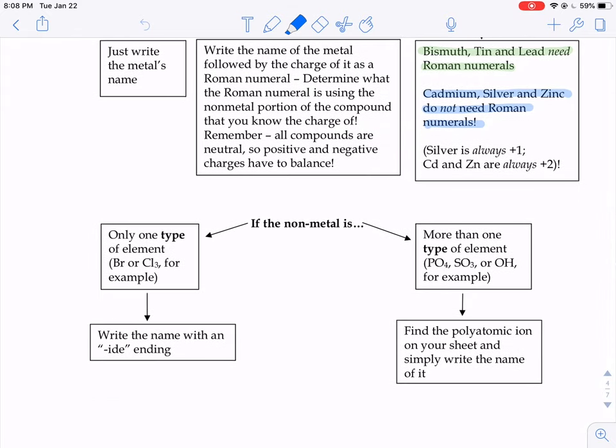What about the non-metal piece? If the non-metal is only one type of element, so at the ending of your chemical formula, you see Br, or Cl3, just one type. Yes, there's three Cls, but it's just Cl. It's not chlorine and bromine, chlorine and iodine. It's just chlorine. Then you're going to write the name with an -ide ending.